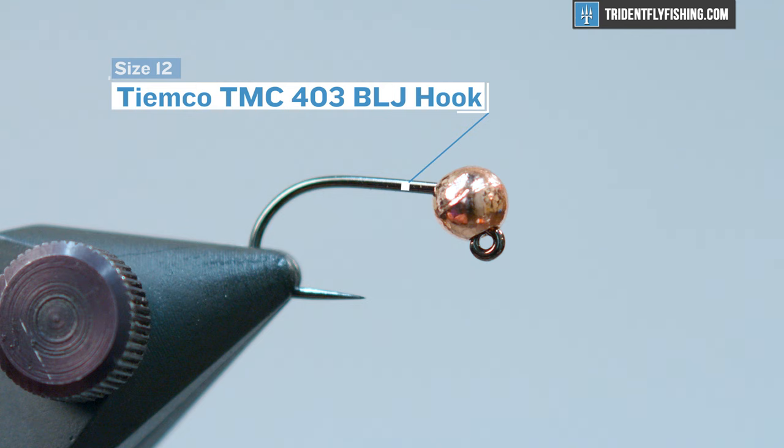We have a TMC 403BLJ hook in the vise. This is a size 12 but this fly can go 8 all the way down to 18 or so. We also have a 3.8 millimeter copper bead in there. It's tungsten.